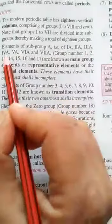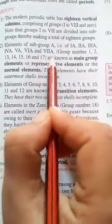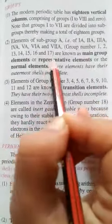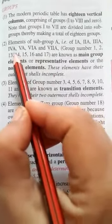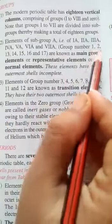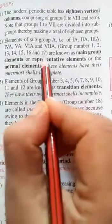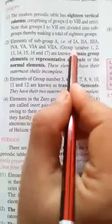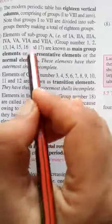Elements of subgroup A, that is 1A, 2A, 3A, 4A, 5A, 6A, 7A correspond to group numbers 1, 2, 13, 14, 15, 16, 17. So here what we are doing is comparing the groups that we had learned, group 1, group 2, and now we are learning group 1 to 18 in the modern periodic law.